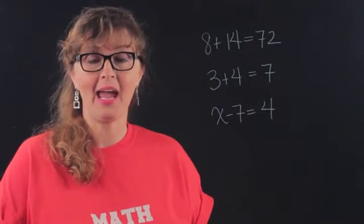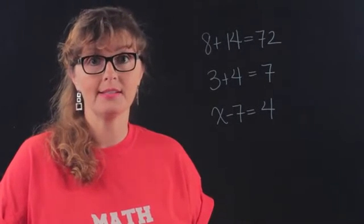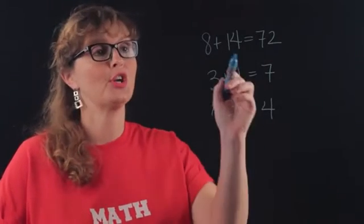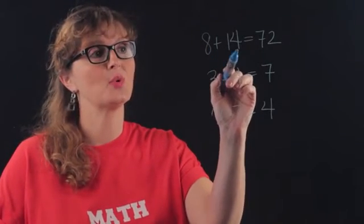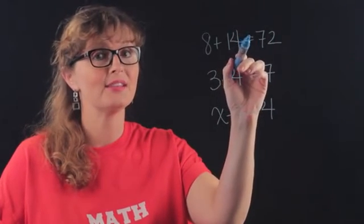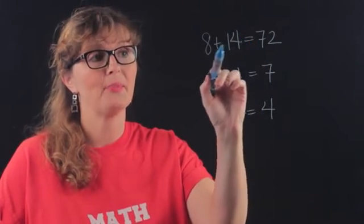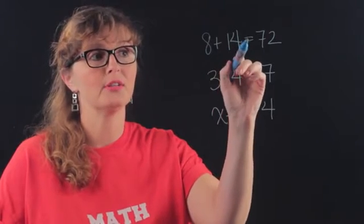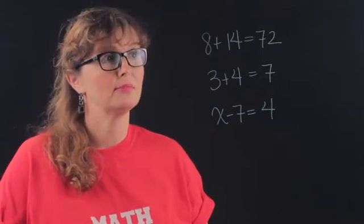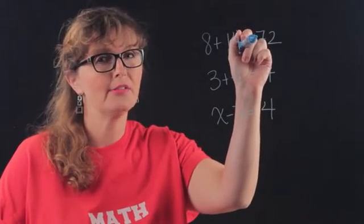So a sentence in math is kind of like a sentence in English. It has a subject and a verb. So the sentence 8 plus 14 is 72, that equals is like the is, so that's our verb. 8 plus 14 subject, verb is, 72 is the predicate nominative maybe.